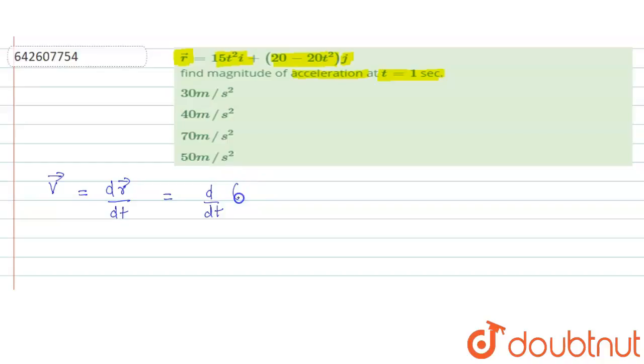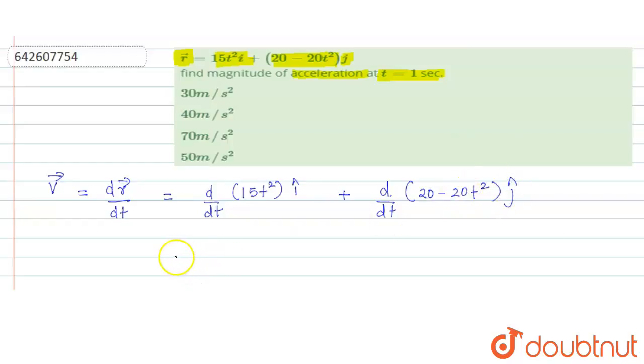So that is d/dt of 15t² î plus d/dt of (20 - 20t²) ĵ.